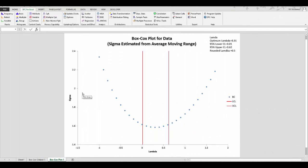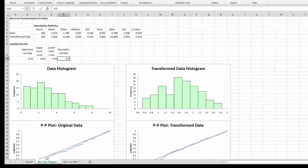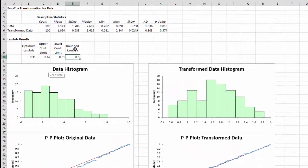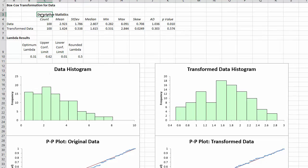In addition to this plot, the program also generates output that compares the original data to the transformed data. And it starts with the descriptive statistics. So for the original data, it gives you the count, the mean, standard deviation, etc. And the same thing for the transformed data.